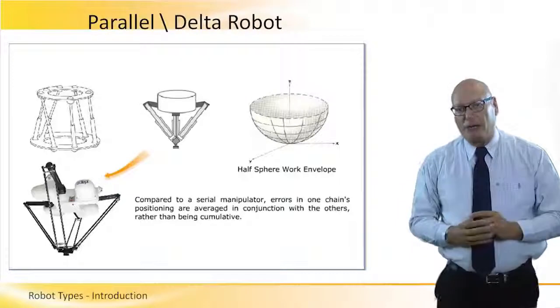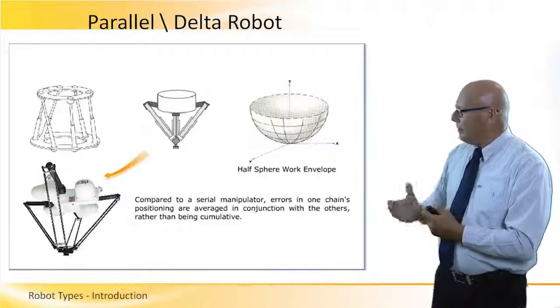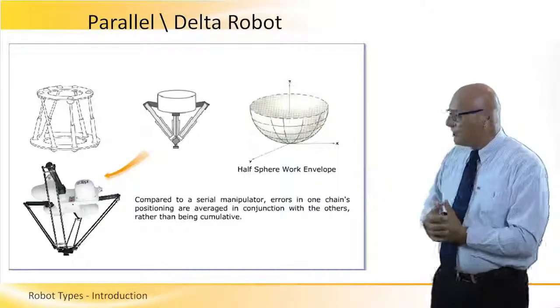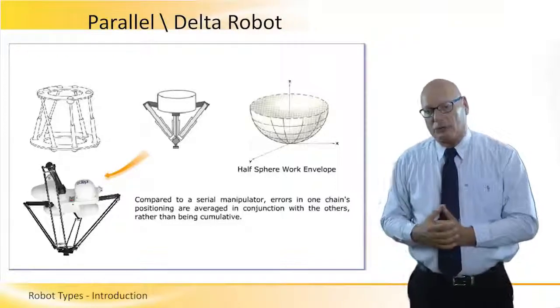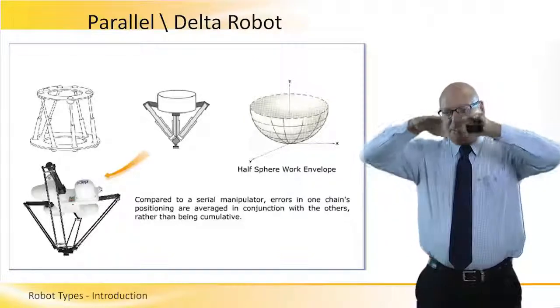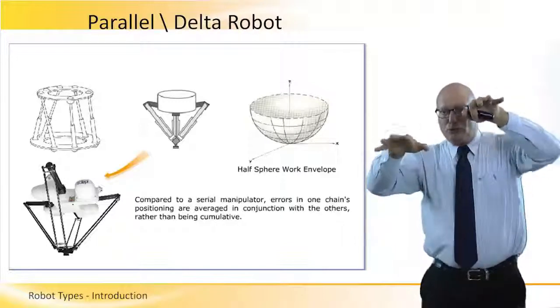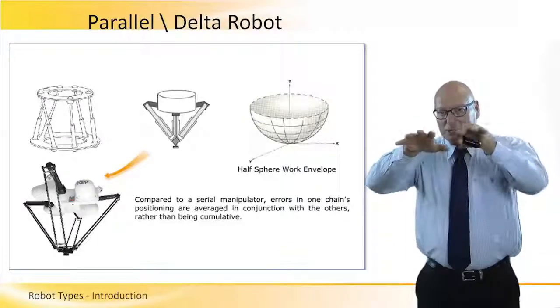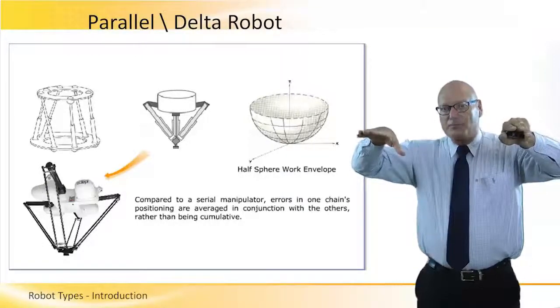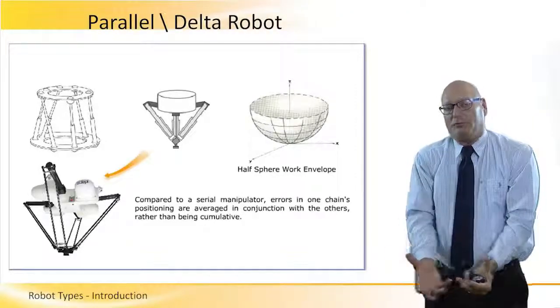The delta robot, parallel robot. See a picture example in the left bottom corner. And we can see a half sphere work envelope in the top right corner. So that means that we have a set of motors that takes a plate and moves it up and down and to the sides. So when we look at it, it will be at its maximum height and can work all around, all underneath it. All beyond it.